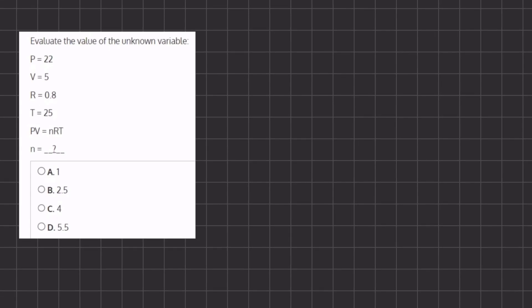In this problem we want to evaluate the value of our unknown variable, and in this case it's going to be n. We are given an expression where n is inside the expression and a few other variables that we are all given the values to. So all we need to do is plug in our variables — the values of them — into this expression here and isolate n to solve. So we are going to plug in p, which is 22,